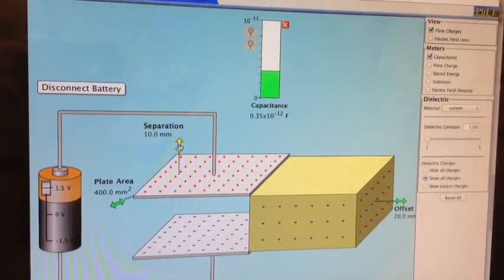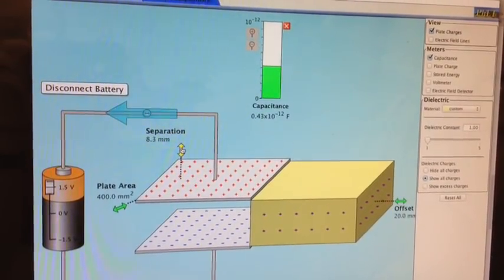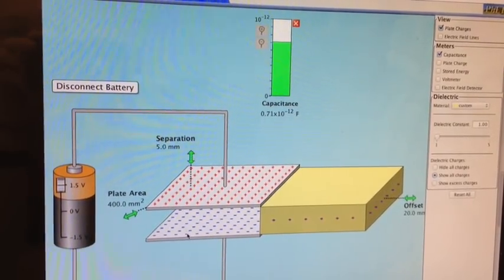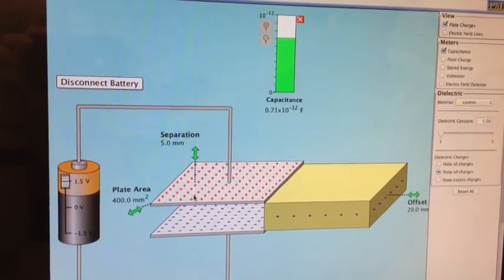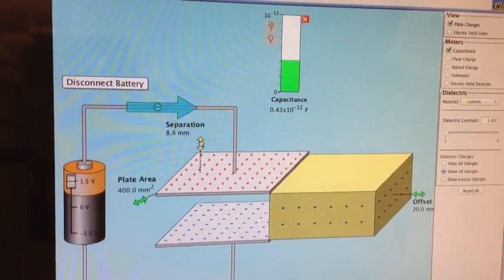Why does plate separation have an inverse effect on capacitance? Well, you can see when I make the plates closer together, the bottom charges will have a greater effect on the top charges, so the capacitance gets larger. It's more effective.